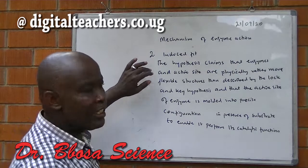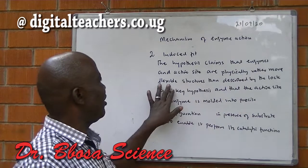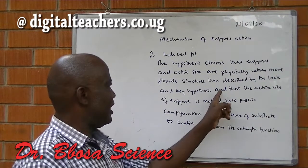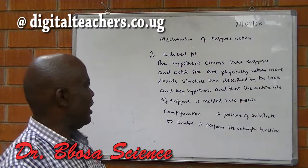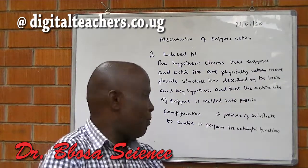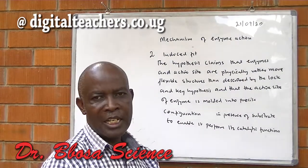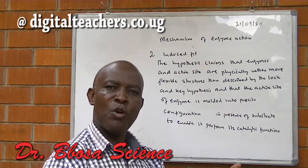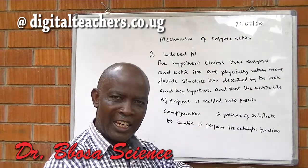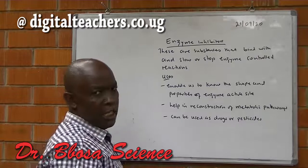Another mechanism is the induced fit hypothesis. It claims that the enzyme active site is a more flexible structure than described by the lock and key model. The active site of the enzyme is molded to a precise configuration in the presence of the substrate to enable it to perform its catalytic function. It is only in the presence of the substrate that the enzyme active site is molded to fit the substrate — it is not as rigid as described by the lock and key hypothesis.